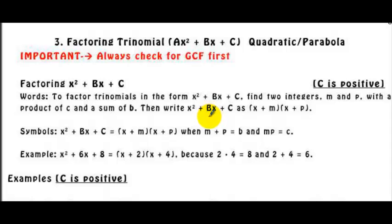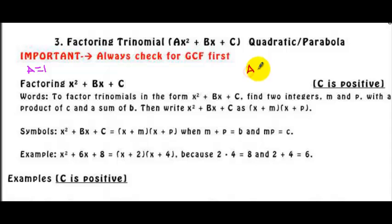The next factoring method we're going to learn is factoring trinomials. Our trinomial will be of the form ax squared plus bx plus c. We will have two cases: the first case is if a is equal to 1, which gives x squared plus bx plus c, and the second case is that a is not equal to 1. Let's discuss the procedure for when a is equal to 1.